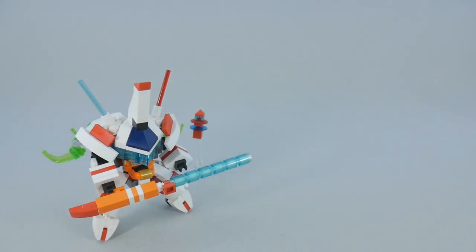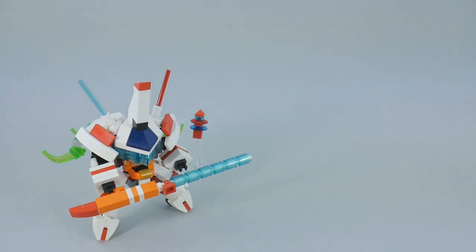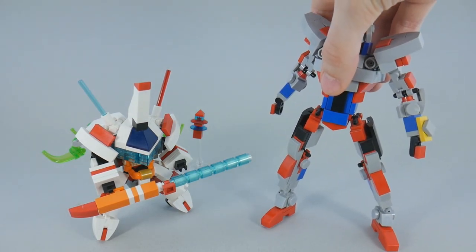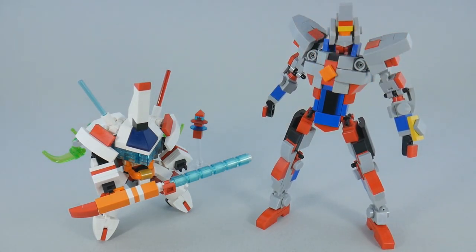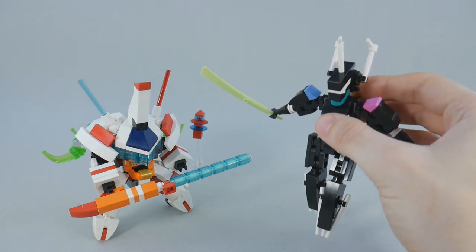Finally, for size comparison, here it is with a minifigure, here it is with Bumblebee, just for fun, here it is with Gridman, and of course, here it is squaring off against Leo.